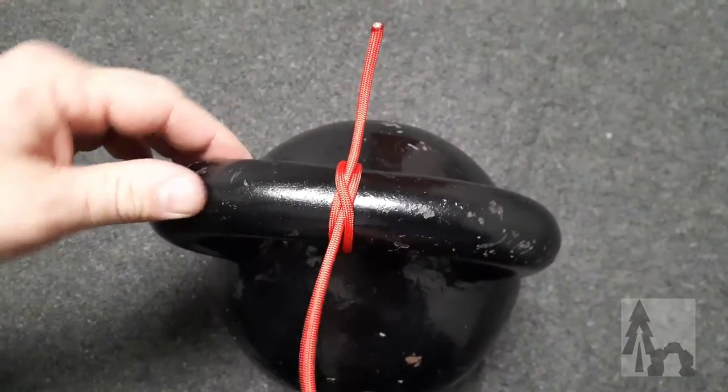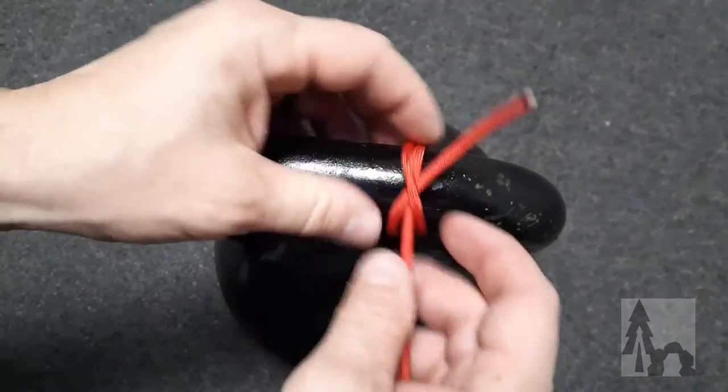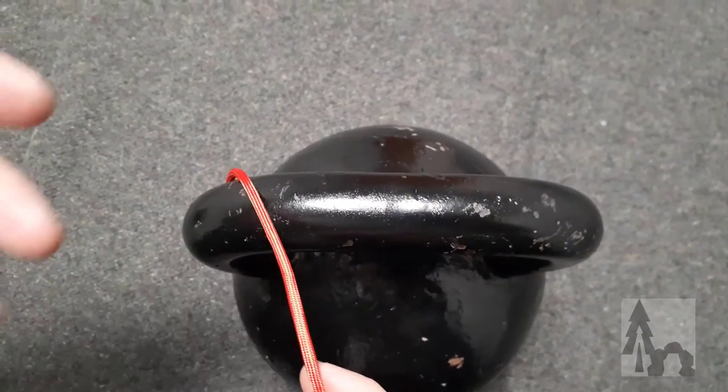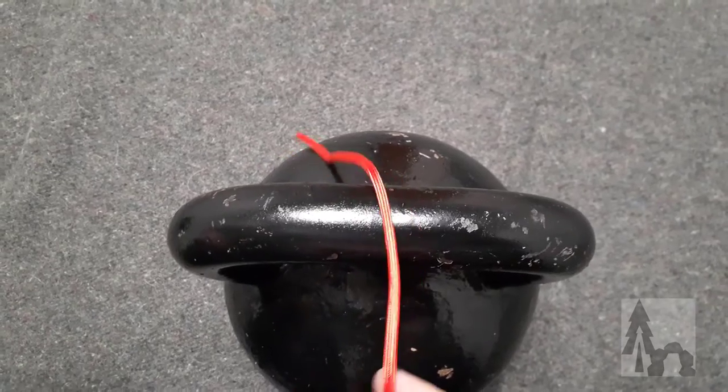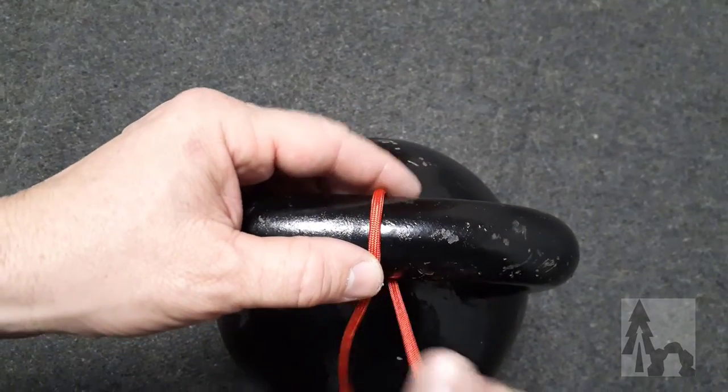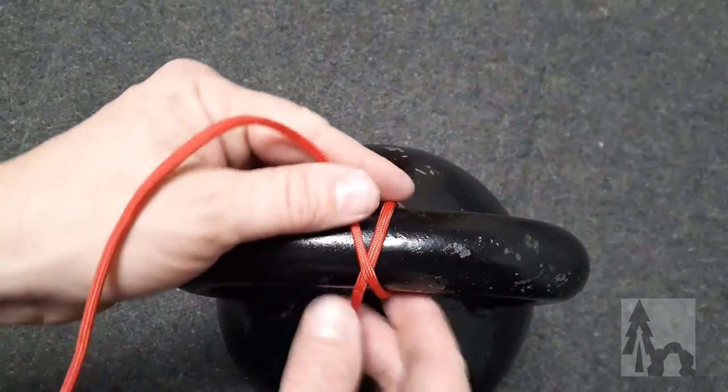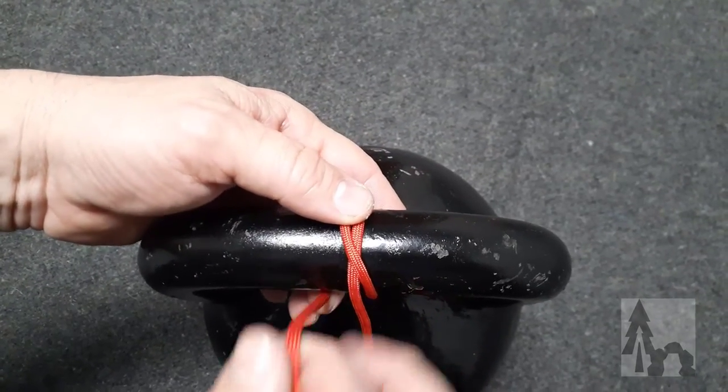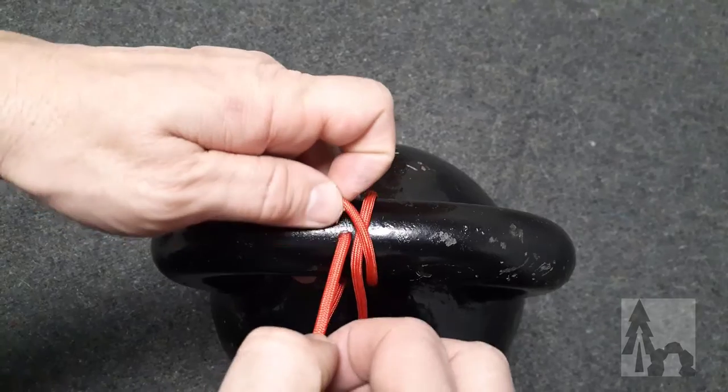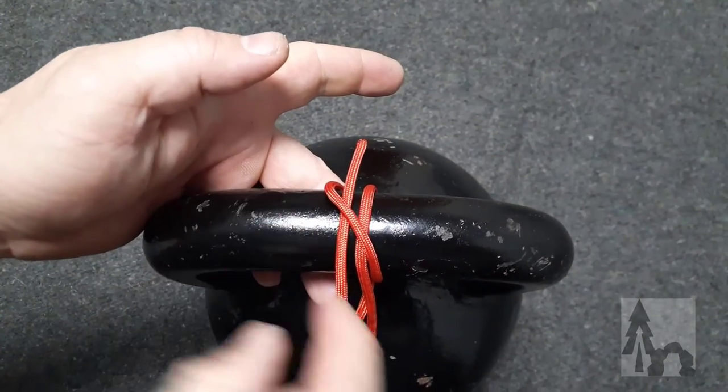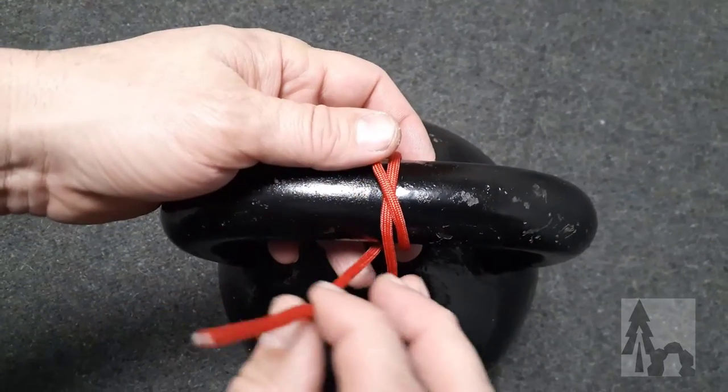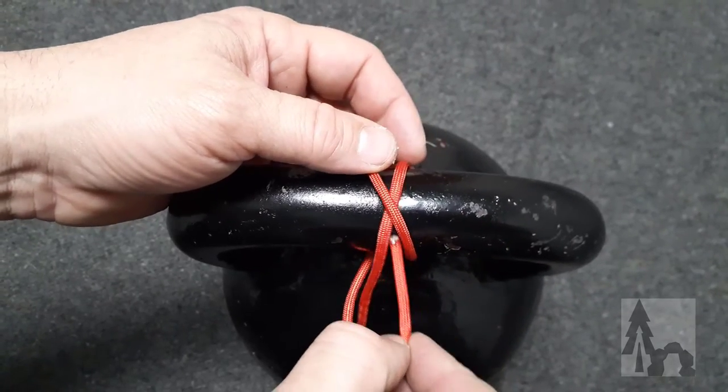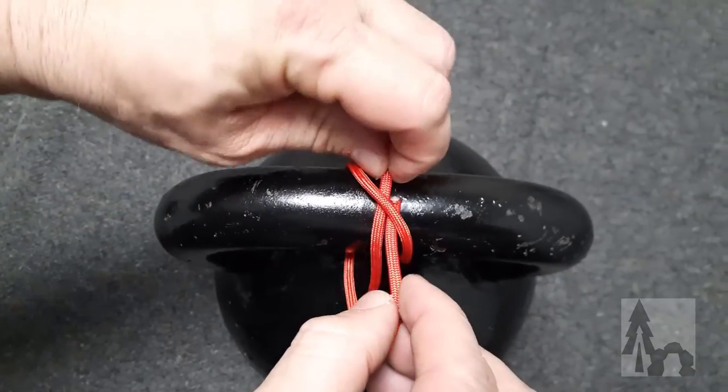Now if you're interested in a different version of this knot that really holds down so well sometimes you have to cut it off, it's the constrictor knot. I'm going to start just like the clove hitch—I come around with my working end, cross my standing end, and this time when I come back around, instead of just tucking under the simple line cross to complete the clove hitch, I'm going to go over my standing end and then under that X.